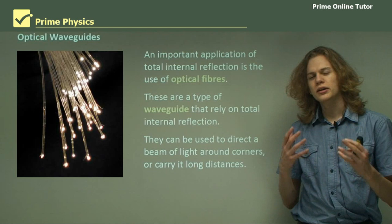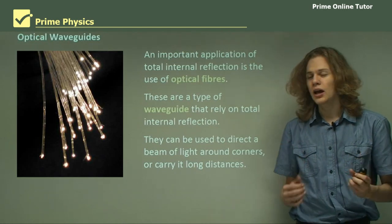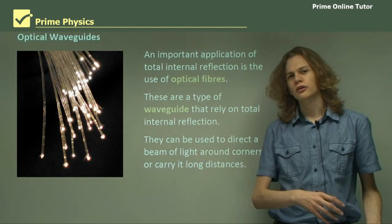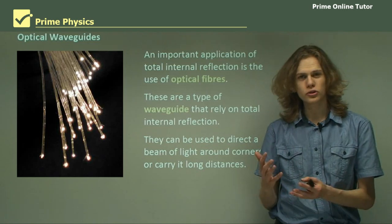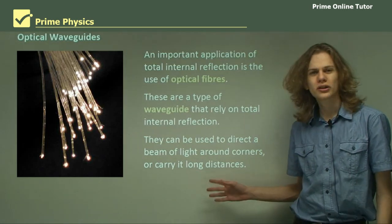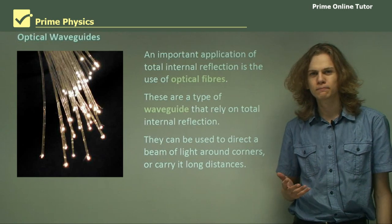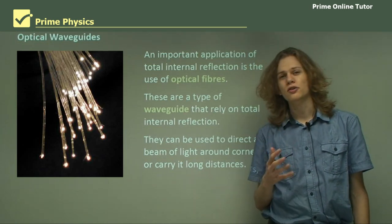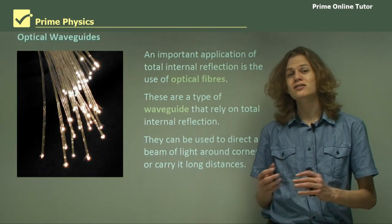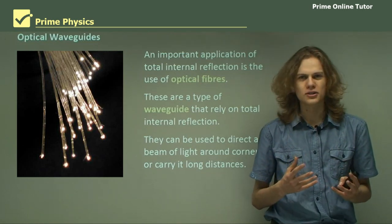So it means that we can take a beam of light and using these optical fibers get the light to turn around corners, for example, or carry it over long distances without losing any energy. One of the nice things about total internal reflection is that it is total — we don't get any light loss to refraction.